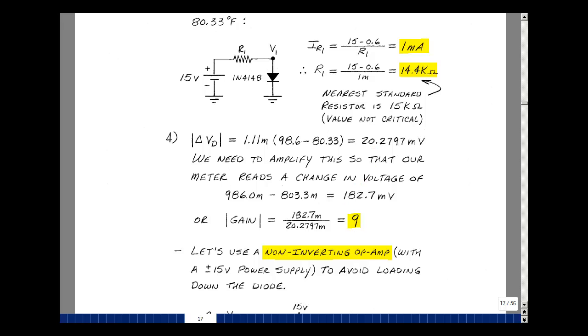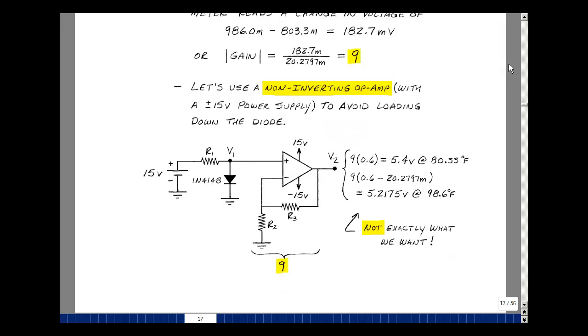Let's use a non-inverting amplifier with a 15-volt power supply, plus and minus 15. Here's our design so far. Got a biasing circuit for our diode as the temperature sensor, and a resistor ratio that will give me gain of 9. At room temperature, we're going to have 0.6 volts across the diode at 27 degrees C or 80.33 degrees Fahrenheit, which equals the gain of 9 times 0.6, giving 5.4 volts. If I increase the temperature, the 20.2797 millivolt change multiplied by 9 gives 5.2175 volts at 98.6 degrees Fahrenheit. The difference comes out correct, but these are not the values I want to display on the multimeter.